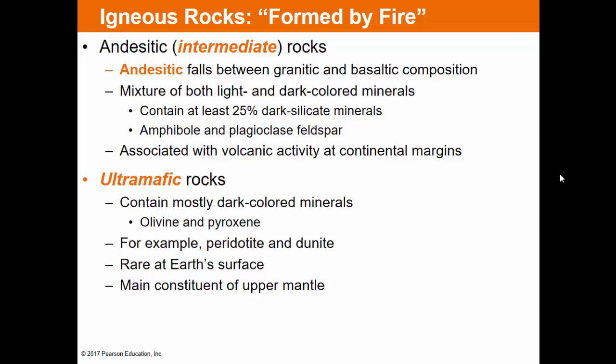Andesitic rocks fall between granitic and basaltic — a mixture of both light and dark minerals with at least 25% dark silicate minerals. You see a lot of andesitic magmas with volcanic activity along continental margins, where partial melting of the mantle and some continental crust provides extra silica, creating an intermediate-silica magma. Ultramafic rocks have very low silica, are very dark, rare at the Earth's surface, but are a significant constituent of the upper mantle — which is why many magmas start out ultramafic.